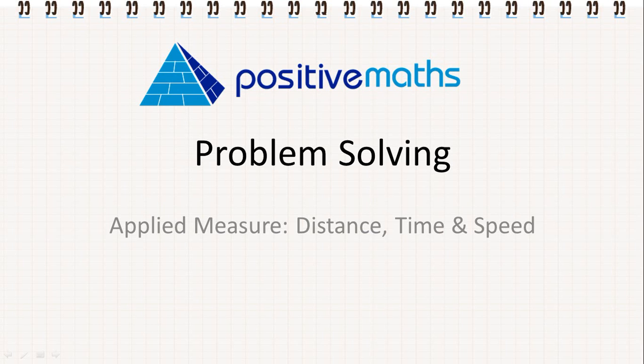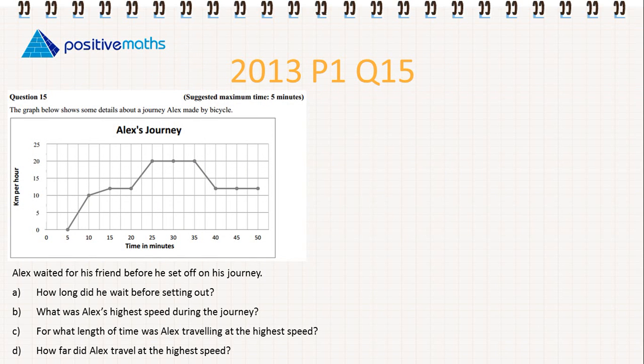In this video for Positive Maths, we're going to have a look at a junior cert question which looks at distance, speed, and time. So this is from the 2013 paper 1, and it's question 15.